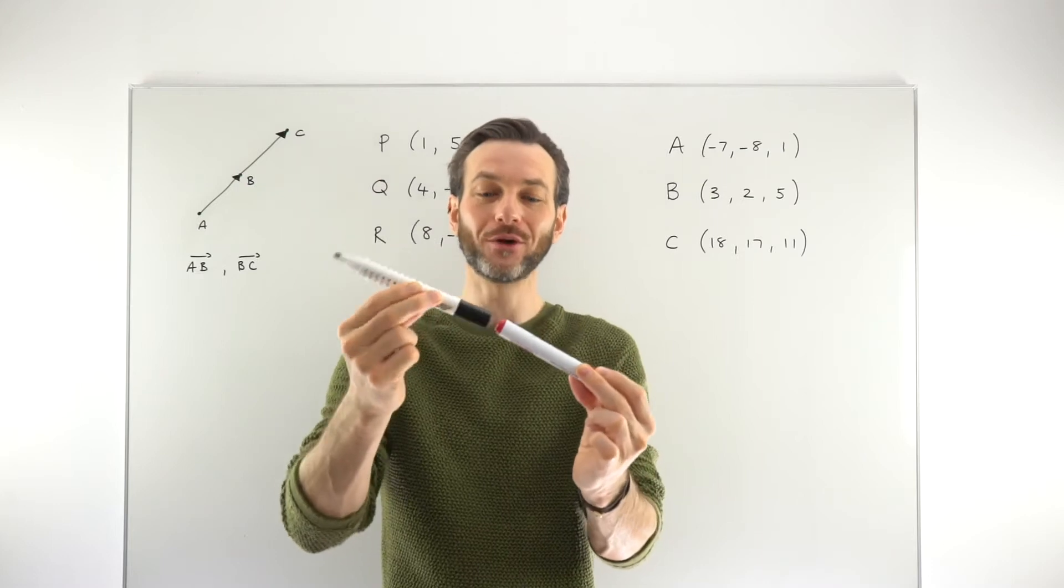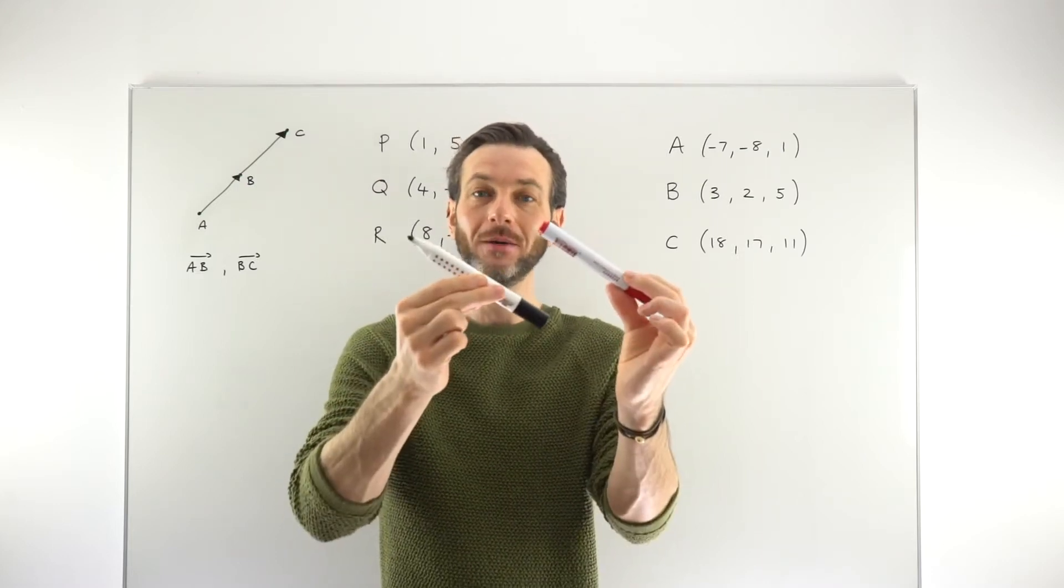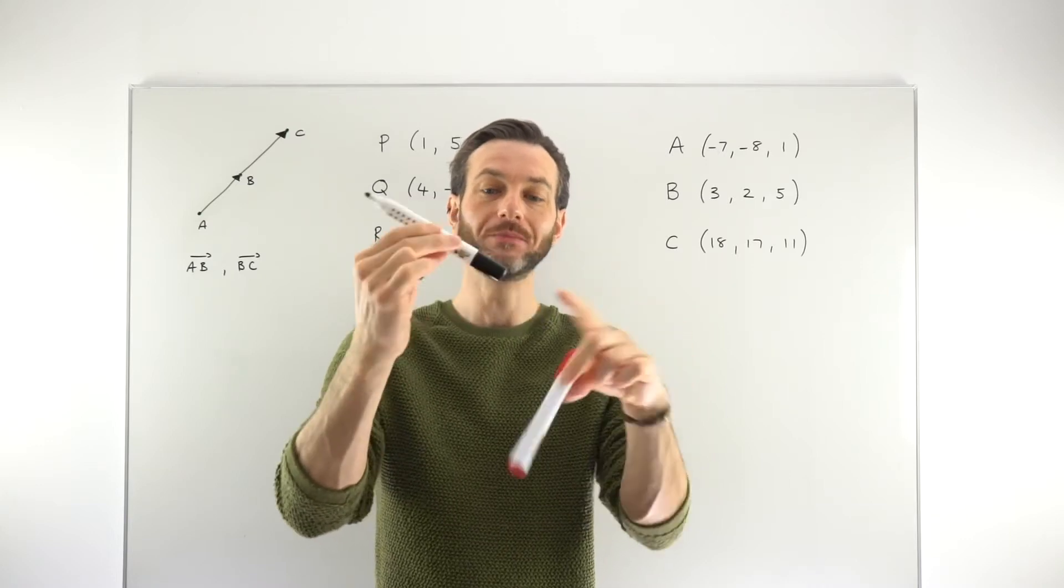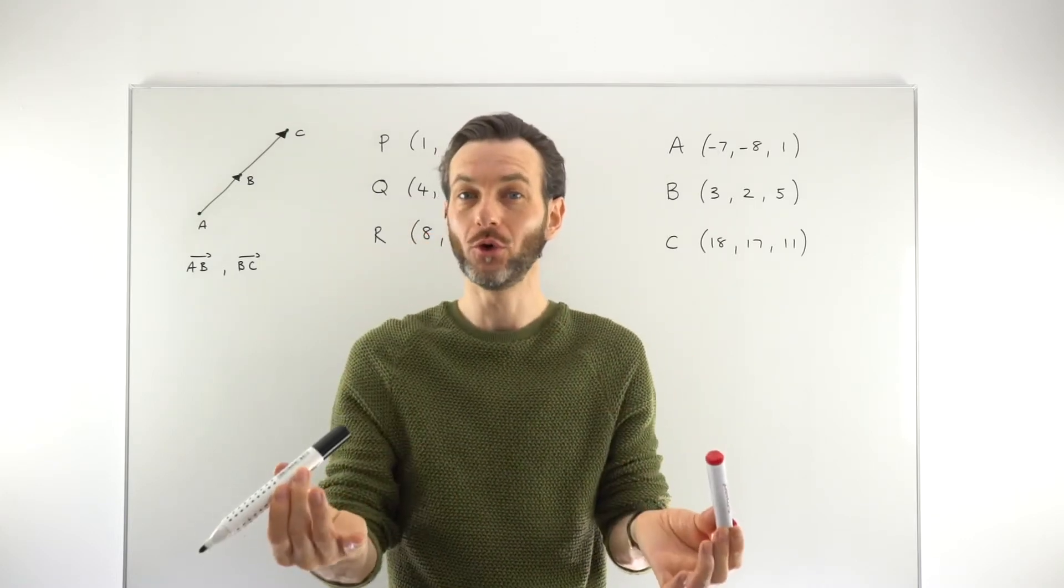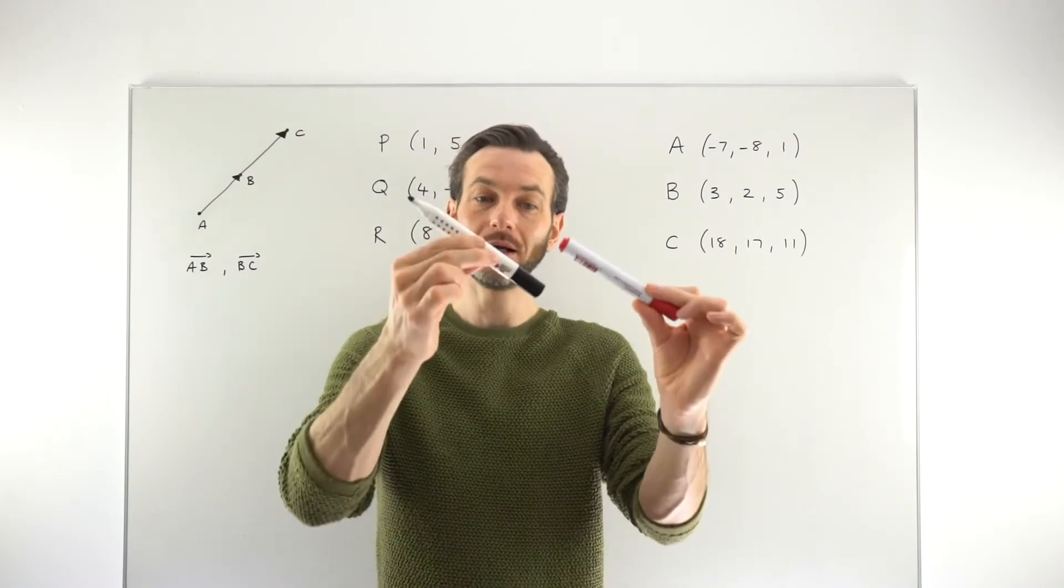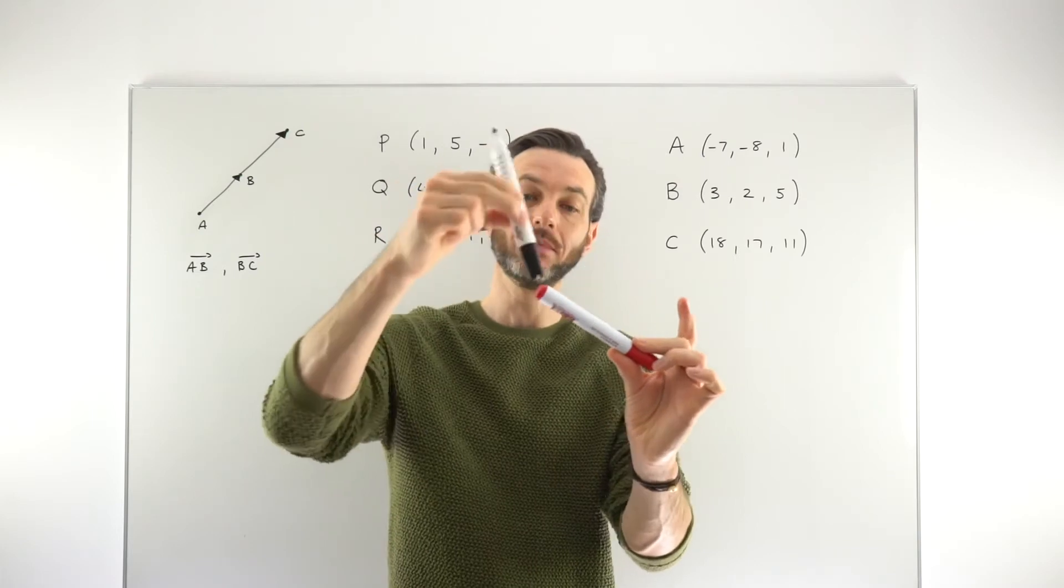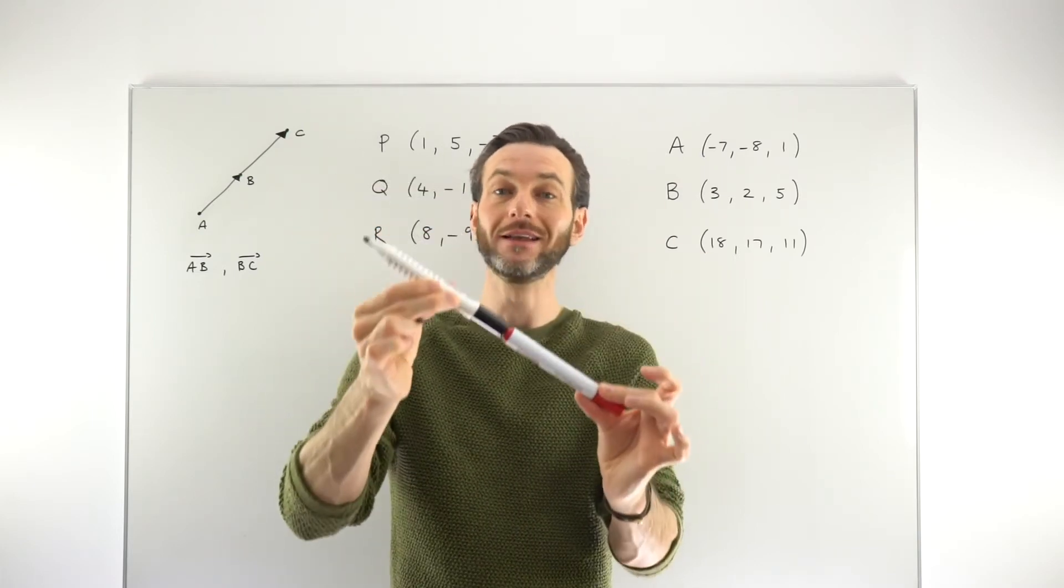So if we can show that our vectors are parallel, but it's not this version of parallel, because this point is point B, and this point is also point B. So we've got what's called a common point. So parallel plus the common point must mean that the points A, B, and C are lined up, so they are collinear.